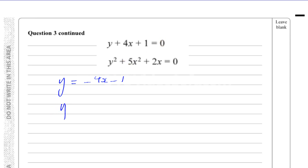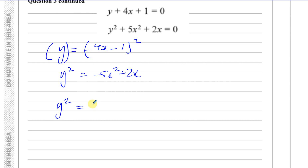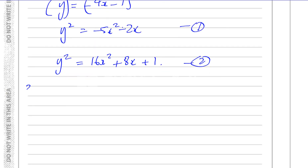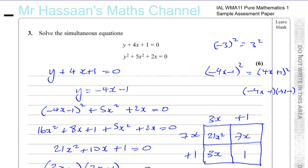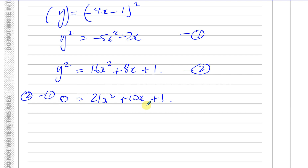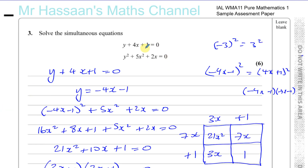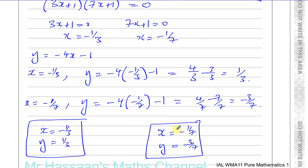Squaring equation 1: y squared equals 16x squared plus 8x plus 1. Now both equations have y squared. Subtracting equation 2 from equation 1: 0 equals 16x squared plus 5x squared plus 8x plus 2x plus 1, which gives 21x squared plus 10x plus 1 equals 0. We're back to the same quadratic as before, so the rest is identical. In this case elimination also works, but making x the subject would create fractions and unnecessary difficulty.